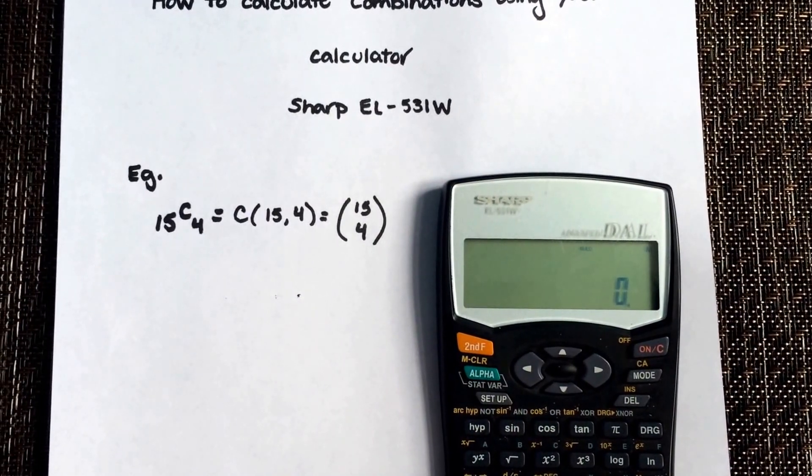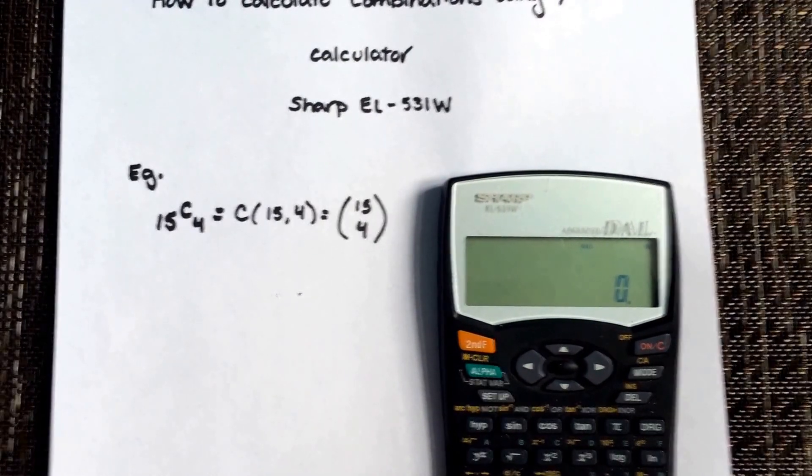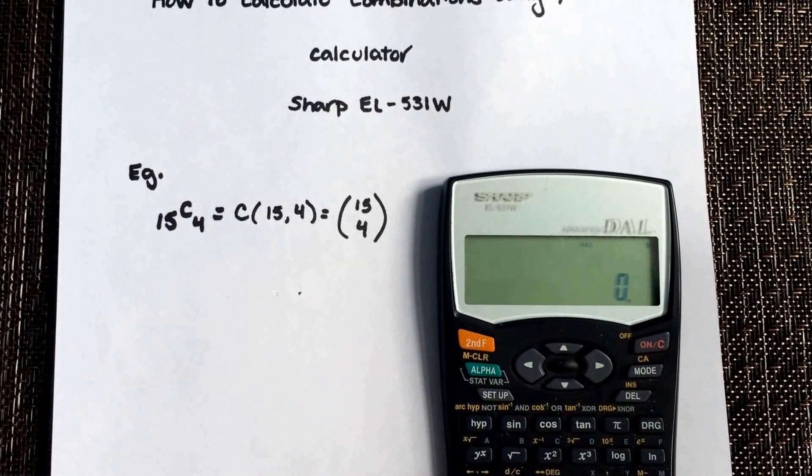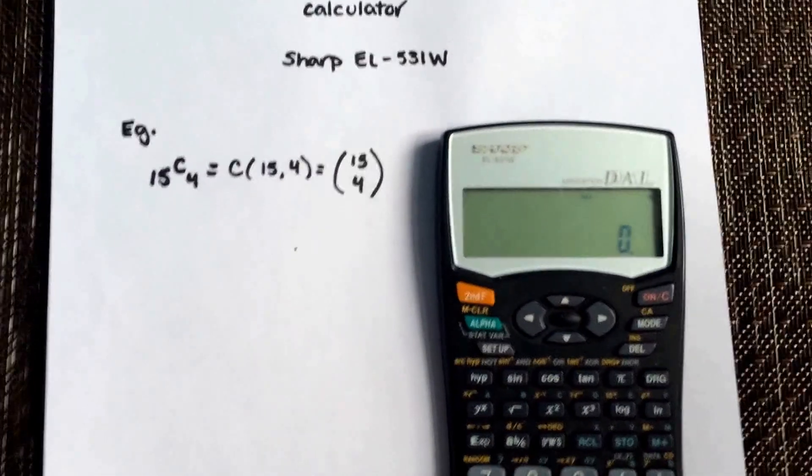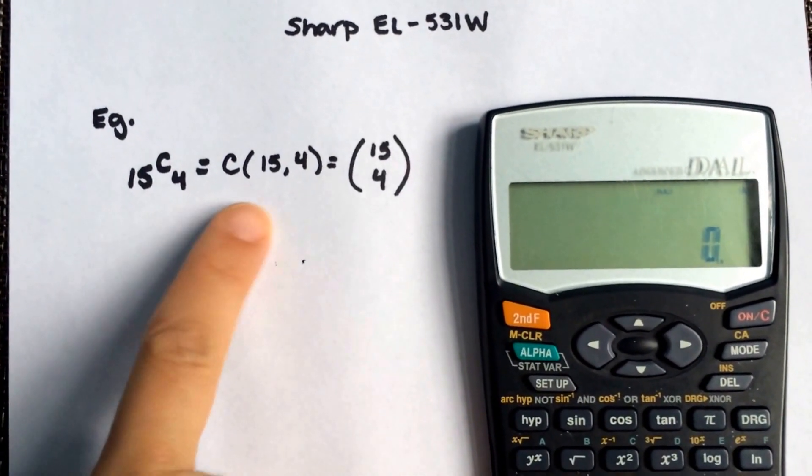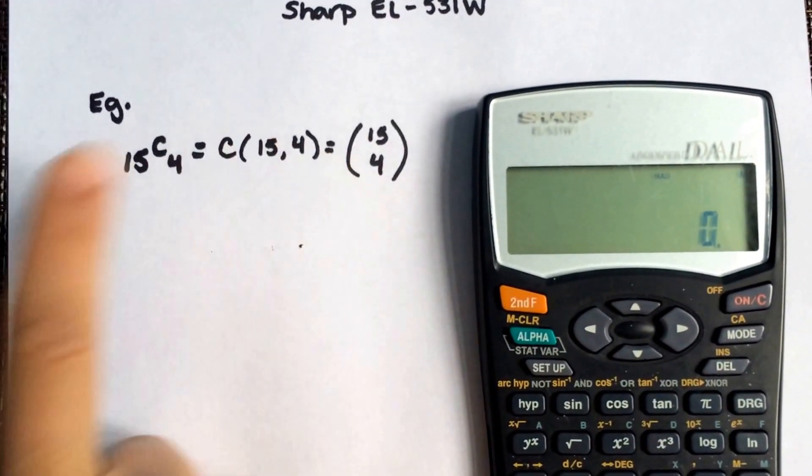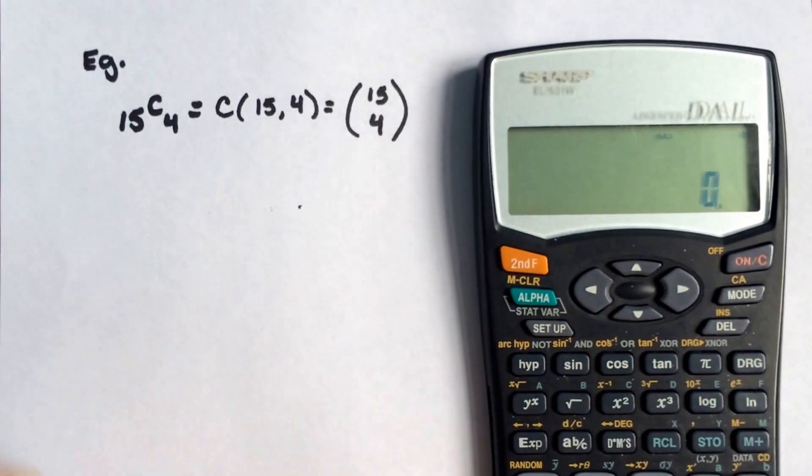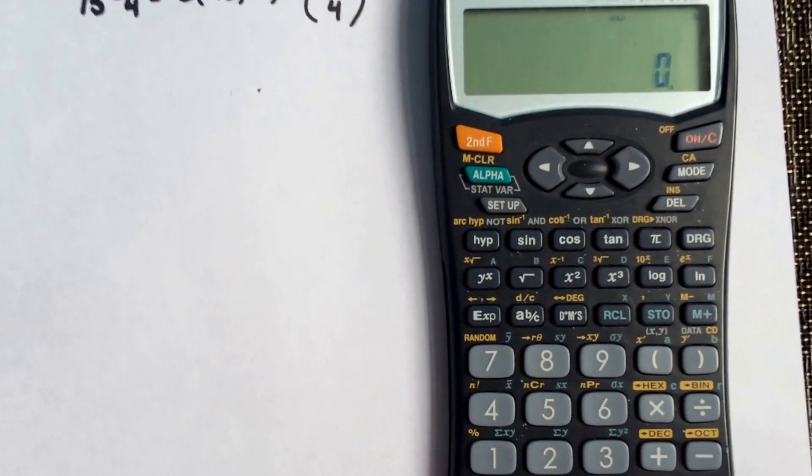In this video I'm going to show you how to do combination calculations on your Sharp EL-531W. So for example, if you want to do 15 choose 4, which can be written in all three of these forms, you'll see it in many different ways.